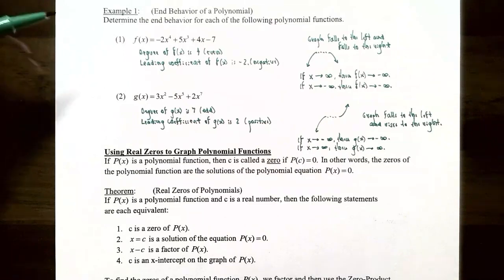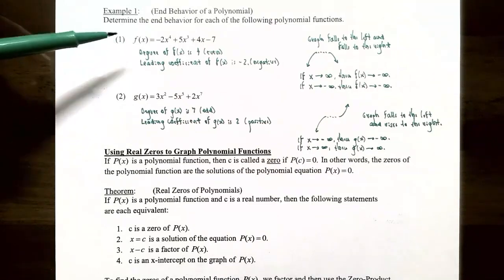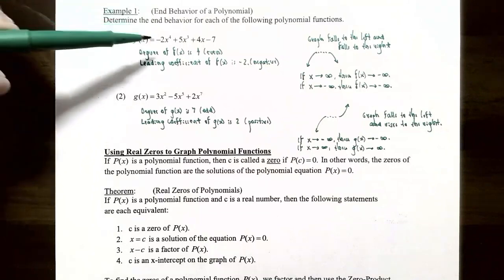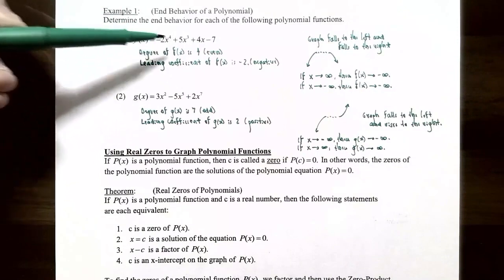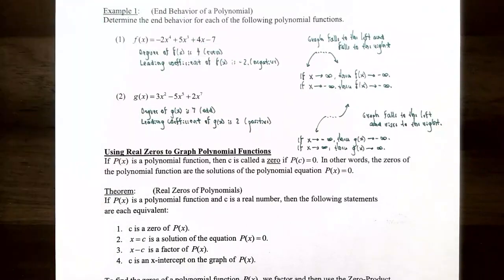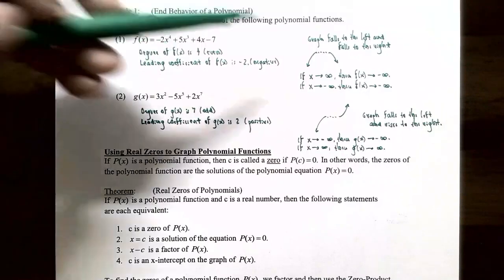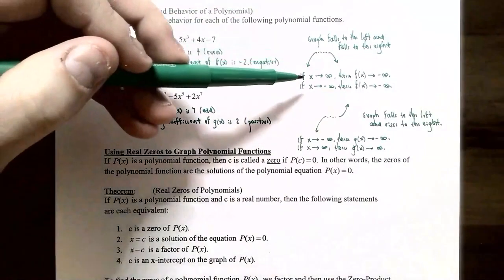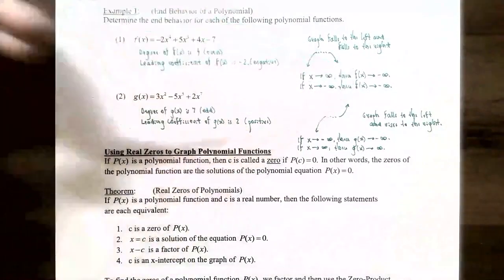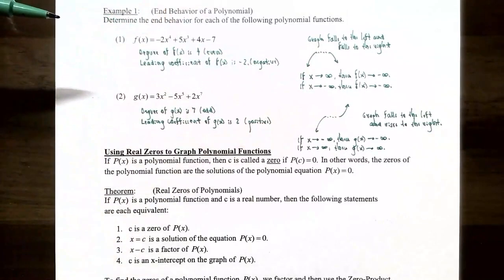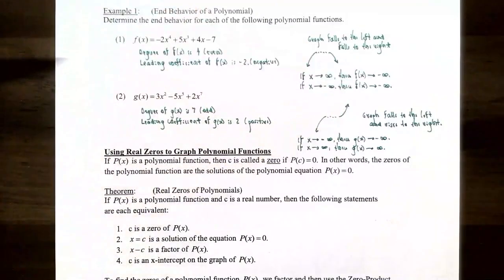Example 1: determine the end behavior of each polynomial function. For f(x) equals negative 2x to the 4th plus 5x cubed plus 4x minus 7, the leading term is negative 2x to the 4th. The degree is 4 (even) and the leading coefficient is negative 2 (negative). So the graph falls to the left and falls to the right: as x approaches positive infinity, f(x) approaches negative infinity; and as x approaches negative infinity, f(x) also approaches negative infinity.